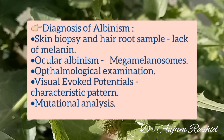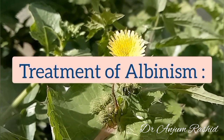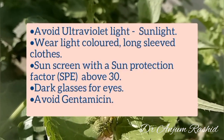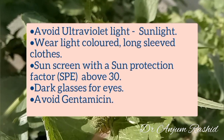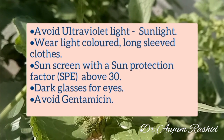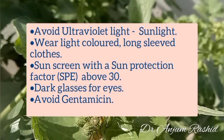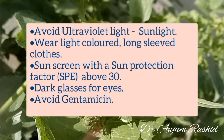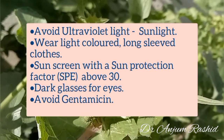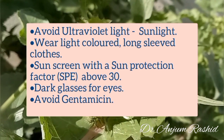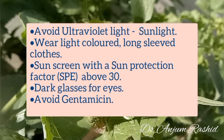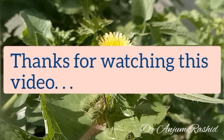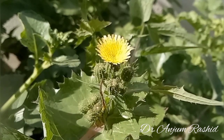Treatment of albinism: to avoid wide ultraviolet light exposure, wear light-colored long-sleeved clothes when going out. Use sunscreen with a sun protection factor above 30. Wear dark glasses for eye protection. Since melanin is present in the internal ear, avoid gentamicin.